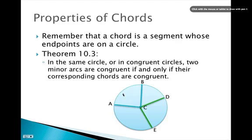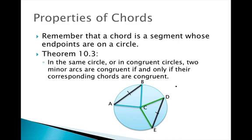So what is the corresponding chord? We've got two sets of angles: angle ACB and angle DCE. If we draw their chords — chord AB and chord DE — and if these two chords are congruent to each other (AB ≅ DE), then the measure of arc AB is also congruent to the measure of arc DE. That's what Theorem 10.3 states.